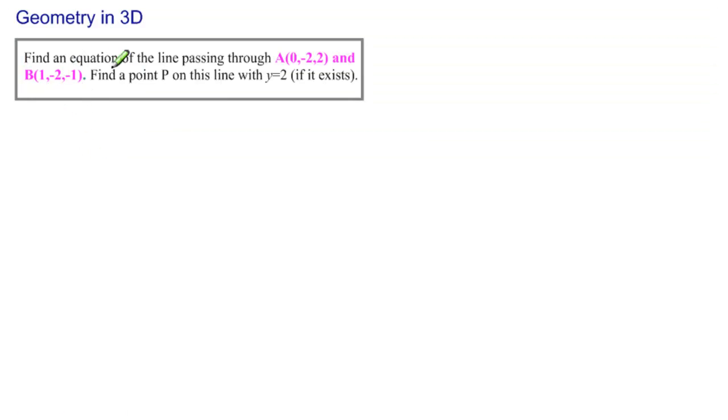The problem says, find an equation of the line passing through point A, (0, -2, 2), and point B, (1, -2, -1). And once we do that, find a point P on this line with y equal to 2, if such a point exists.